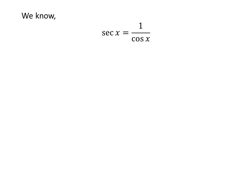We also know 1 upon cosine of x is equal to secant of x. So, secant of x is equal to 1 upon minus half, which is equal to minus 2, as the reciprocal of half is 2.